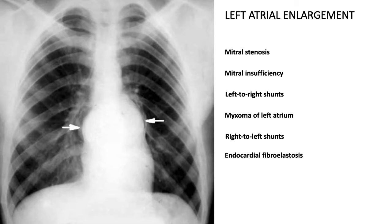Now let's talk about the enlargement of the heart — how cardiomegaly begins. Usually it starts one chamber at a time. We can start with left ventricular dilatation, then left atrium dilatation, then right cavity dilatation, or the reverse. In a chest X-ray showing left atrium enlargement, you can see both of the superior parts of the heart are enlarged or widened. Causes include mitral stenosis, mitral regurgitation, left-to-right shunts, myxoma of the left atrium, right-to-left shunts, and endocardial fibroelastosis.